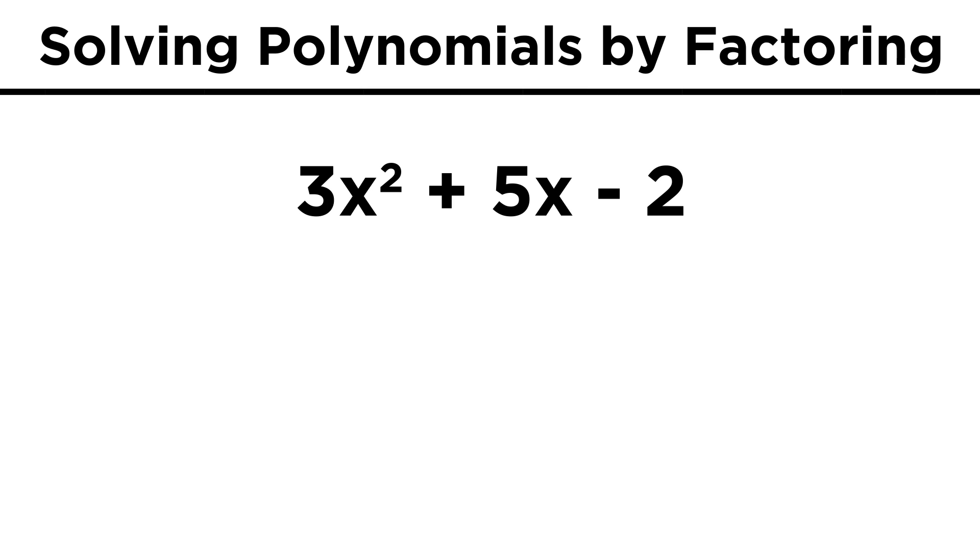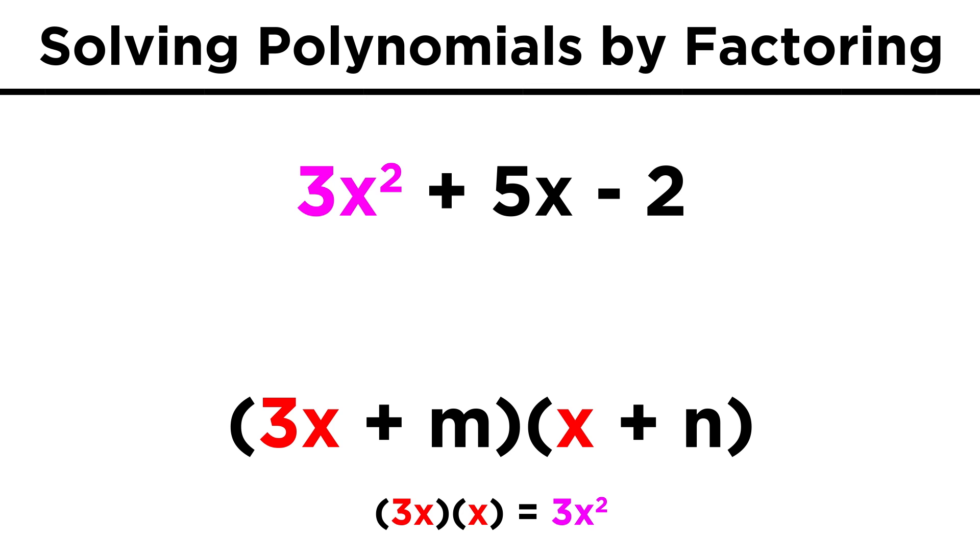Let's do one more that is a little trickier, 3x² + 5x - 2. Now that there is a coefficient of three by the x², that means one of the binomials has to start with 3x, and the other with x, because that's the only way to get 3x² for the first term.